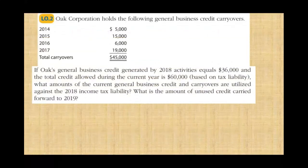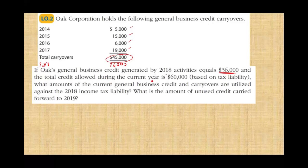Oak Corporation holds the following general business credit carryover from 2014 through 2017, totaling $45,000. The general business tax credit generated by 2018 activity is $36,000. The total credit allowed during the current year is $60,000. Using FIFO, we start with the oldest credits first.